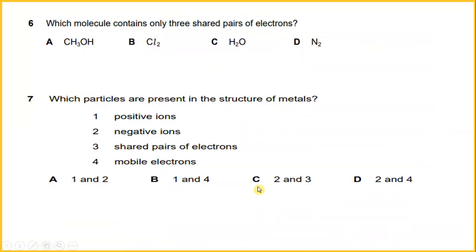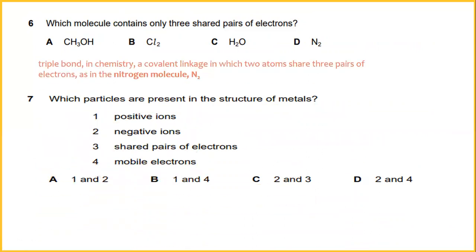Number six, which molecule contains only three shared pairs of electrons? In chemistry, a covalent linkage in which two atoms share three pairs of electrons is a nitrogen molecule which is N2. The answer is D.